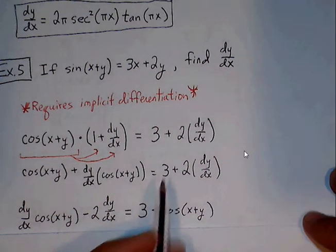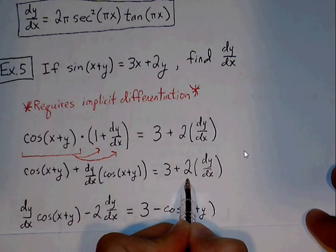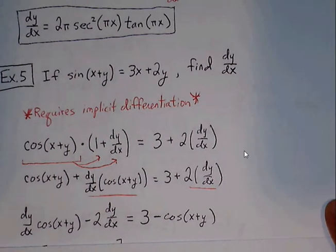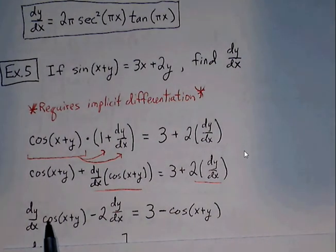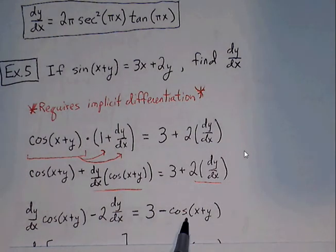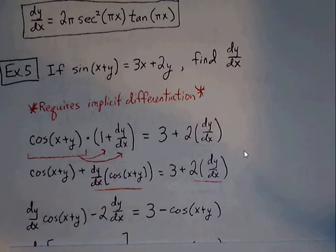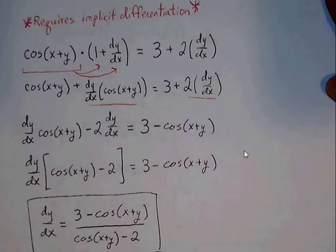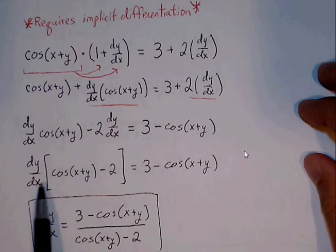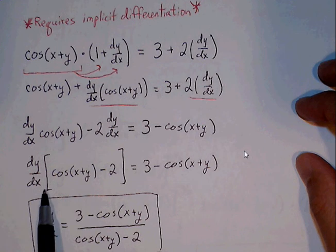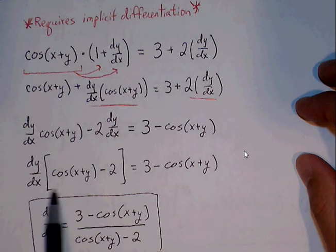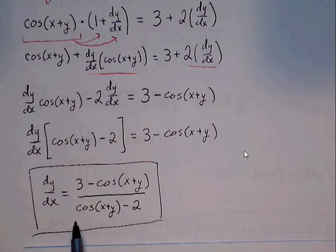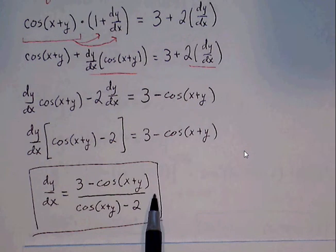Next, we combine the terms with dy/dx. We move those terms to the left of the equation and move cosine of x plus y to the right side, taking steps to isolate dy/dx. Finally, we factor out dy/dx, leaving us with cosine of x plus y minus 2. To get dy/dx by itself, we divide both sides, leaving us with the derivative being 3 minus cosine of x plus y, all over cosine of x plus y minus 2.